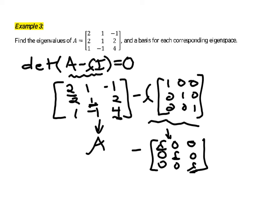Every other component, we're subtracting zero. For example, this position is 1 minus 0, then negative 1 minus 0, and then 2 minus 0. So we're only affecting the diagonal entries when we subtract this lambda I matrix.